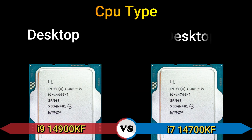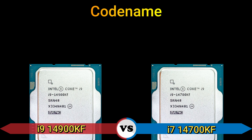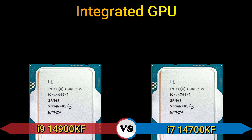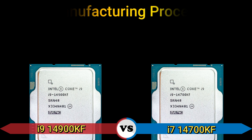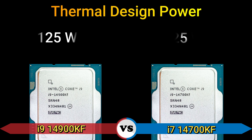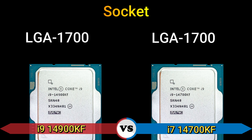CPU type: desktop. Instruction set: x86-64. Codename: Raptor Lake Refresh. Integrated GPU: no. Manufacturing process: 10 nanometer. Thermal design power: 125 watts. CPU temperature: 100 degrees Celsius. Socket: LGA 1700.